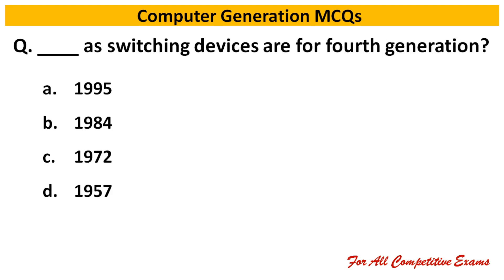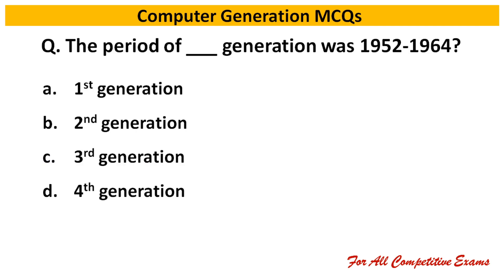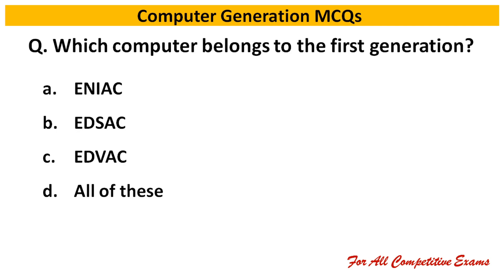Next question: Dash switching devices are used for fourth generation. Right answer is 1972. Next question: FORTRAN language was developed by IBM in which year? Right answer is — using microprocessor.